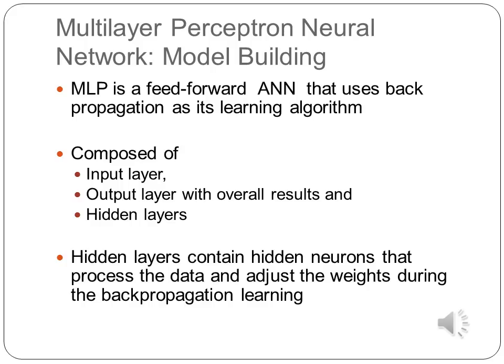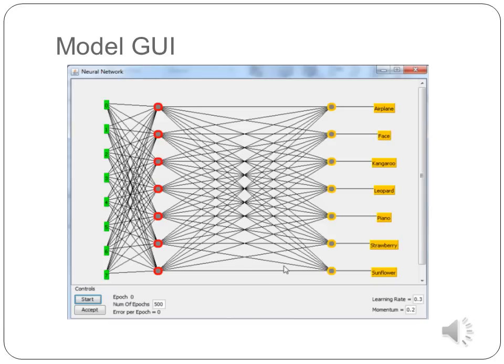The multi-layer perceptron neural network is the algorithm used to build the network model. It is a feed-forward neural network that uses backpropagation as its learning algorithm. After importing the file into Weka and setting the classifier as the MLP, the neural network model is built.